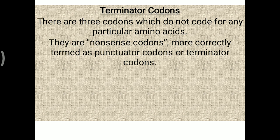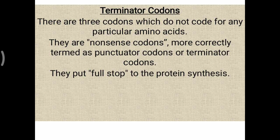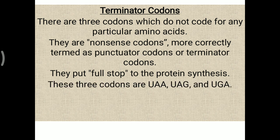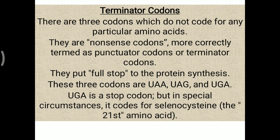Terminator codons: there are three codons that do not code for any particular amino acid. These are called nonsense codons, more correctly termed punctuated codons or terminator codons — they put a full stop to protein synthesis. The three terminator codons are UAA, UAG, and UGA.